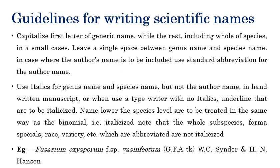The guidelines for writing a scientific name of fungi are as follows. As seen in the example Fusarium oxysporum forma specialis vasinfectum: the genus name should always be capitalized, the species name starts with a small letter, and there is a single-digit gap between the genus name and species name to separate them. The forma specialis can also be italicized.